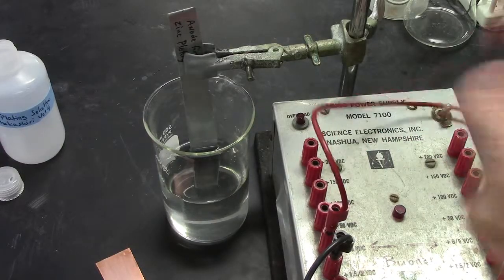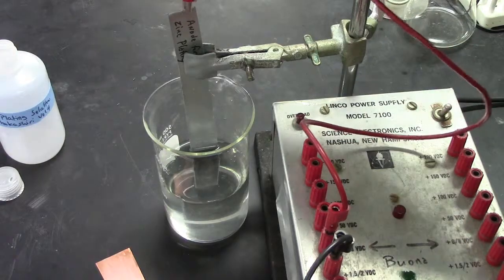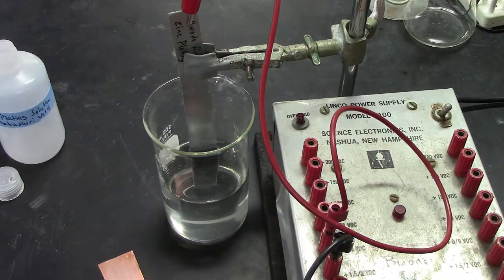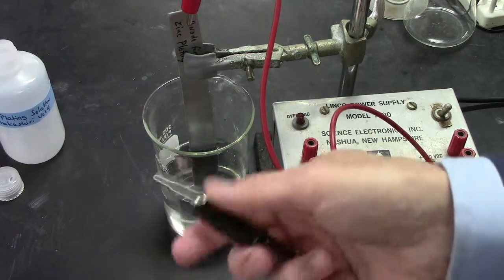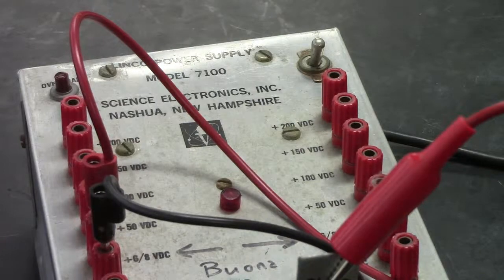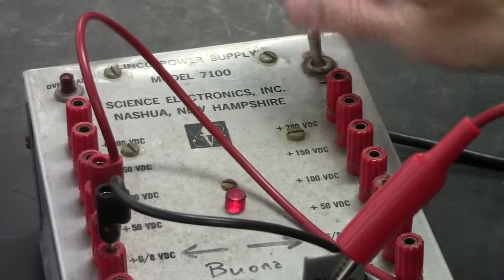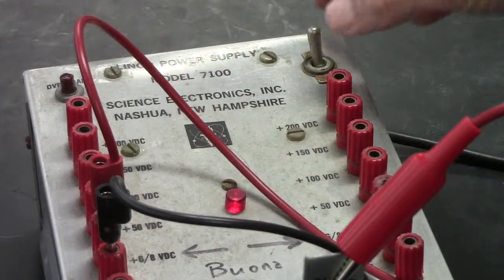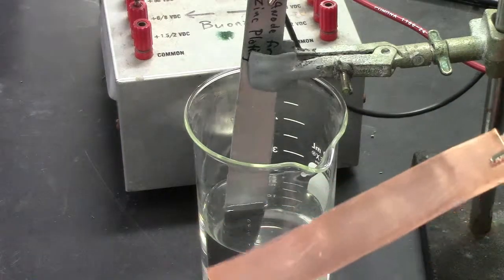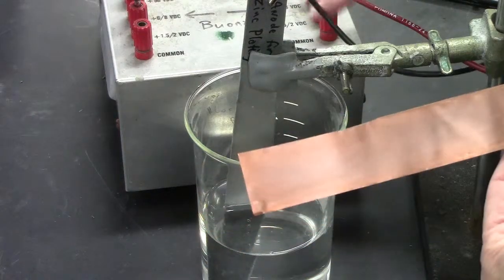I'm going to hook the zinc to this red wire and the copper to the black wire. So now on the electrical I'll flip the switch and the light goes on showing that electricity can now flow. So now here's the copper. It's not in the solution yet. The power supply is on.